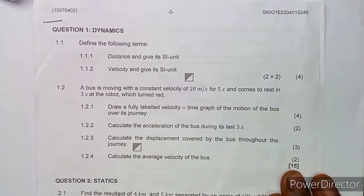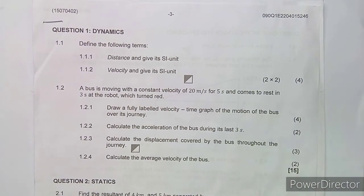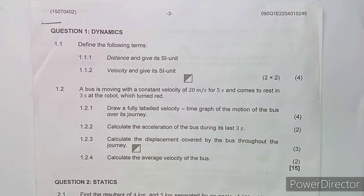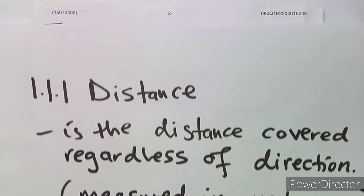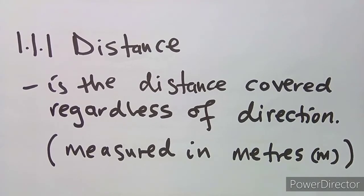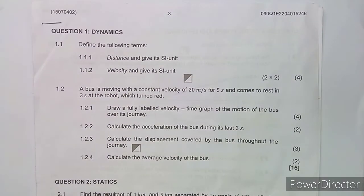The first question asks us to define the following terms. Question 1.1.1 is distance — give it as a unit. We know that distance is the distance covered regardless of direction. This is measured in meters.